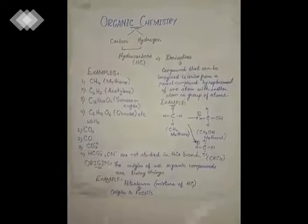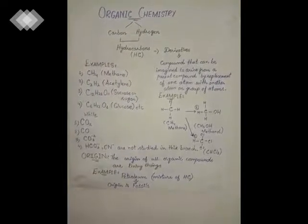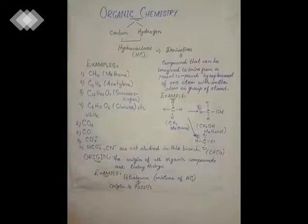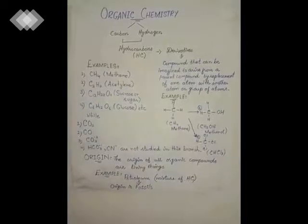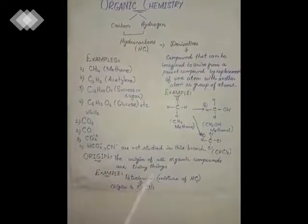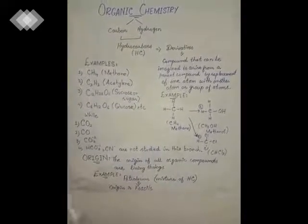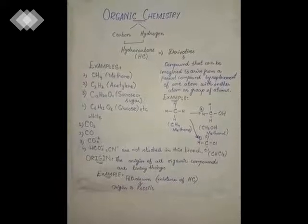A second example from the parent compound methane: three hydrogens of methane are replaced by three chlorine atoms, forming a totally different compound — chloroform (CHCl₃), which is used for anesthetic purposes. This is also a derivative of methane.